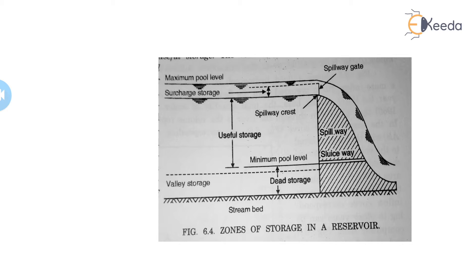Now let us see the useful storage. The useful storage is the volume of water stored between the normal pool level and the minimum pool level. Here we are considering that the level of the water is at the spillway crest and there is no spillway gate. From this storage only we can extract the water and use it for various purposes.